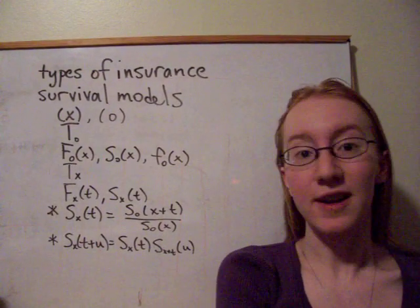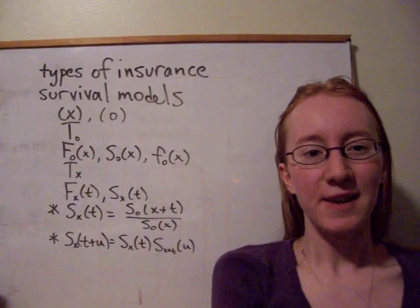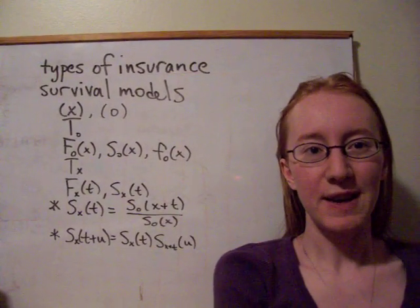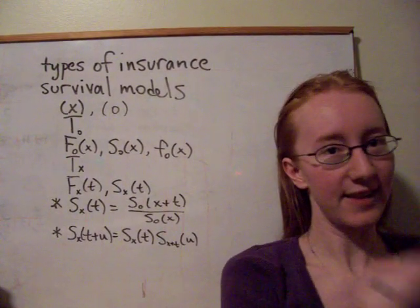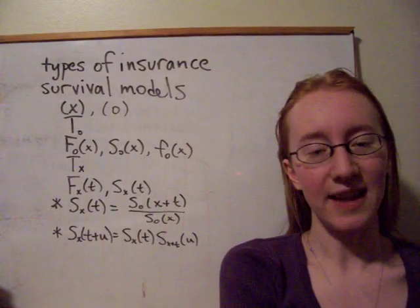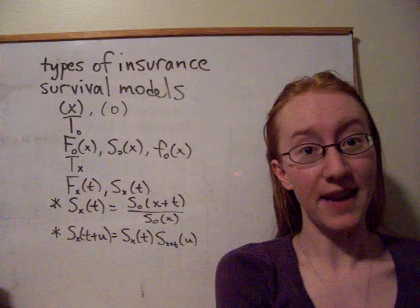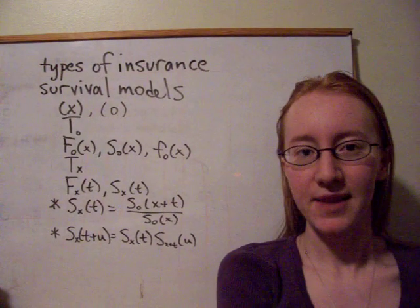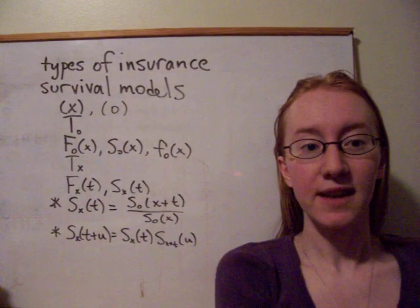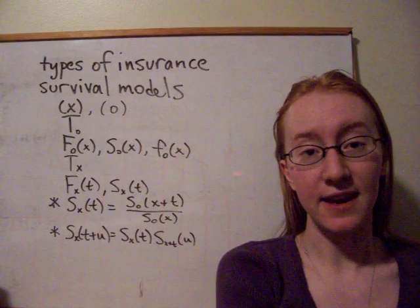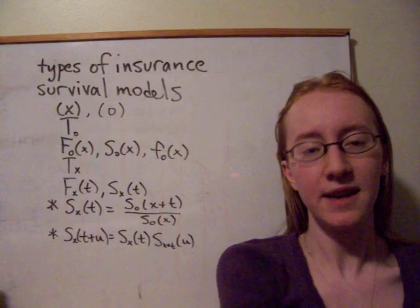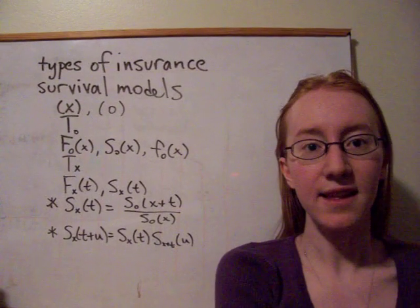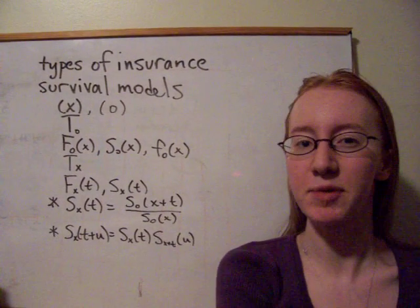So we introduced a lot of new notation this week. The first thing was, we actually have a notation for a person who is a certain age, and we call that a life age x, that's x in brackets, or of course at the very start of someone's life they're a life age 0, 0 in brackets. And then we defined a random variable, which is the entire length of that person's life, and that's called T0. So starting from the instant they're born until the person's death, that's a continuous random variable, which we call T0.